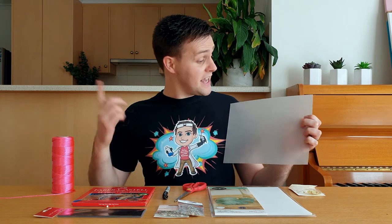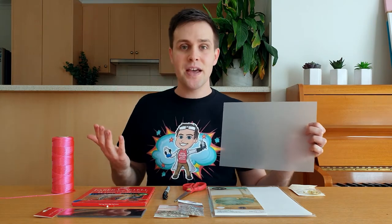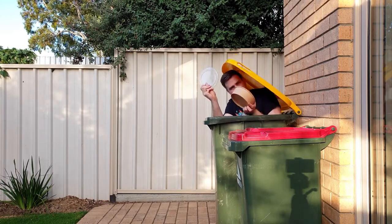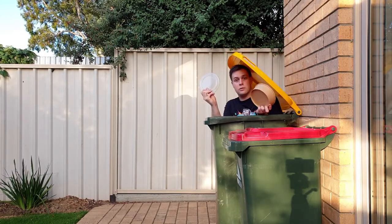But polystyrene also comes as clear thin sheets and are sometimes used for takeaway containers. This means you don't have to buy your shrinking plastic. Just have a look in your recycling bin to see if there's any in there.